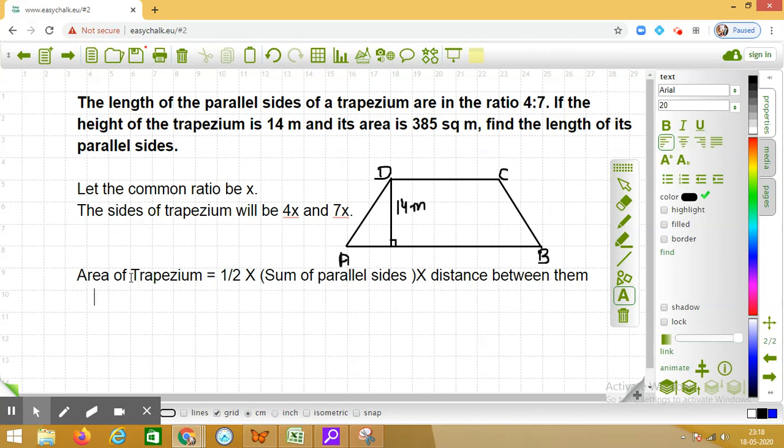We are given that area of trapezium is 385 square units. So 385 equals half into sum of the parallel sides. So add 4x and 7x, you get 11x into distance between them, that is 14 meters.